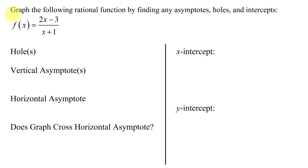In this example, I need to graph the following rational function by finding any asymptotes, holes, and intercepts. So I need to find all this information before I can graph my function. The function is f of x equals the quantity 2x minus 3, all divided by x plus 1.